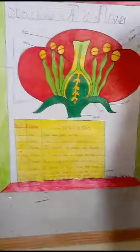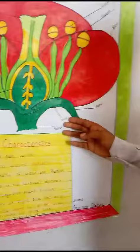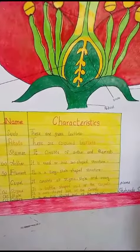There are four major parts of the flower. The first part is sepals. They are sepal-shaped. These are green leaflets.